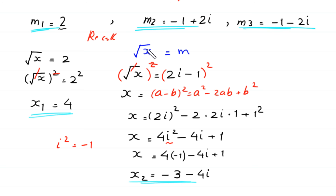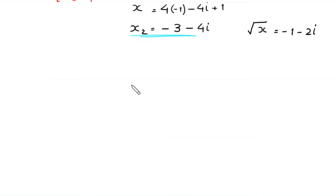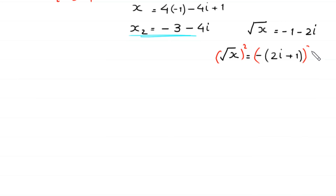Now, to find the third value of x, in this equation we put the value of m₃: negative 1 minus 2i. So square root of x is equal to negative 1 minus 2i, which can be written as minus (2i plus 1). From here, we take the square of both sides. The square cancels with the square root. The square of a negative number is always positive, so we can write this as (2i plus 1) squared.